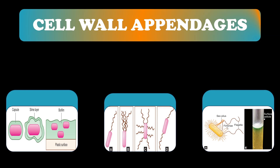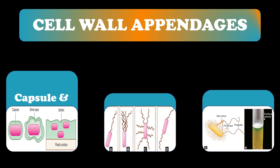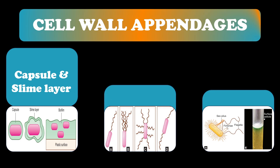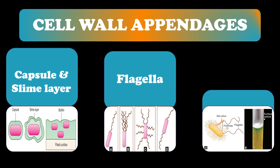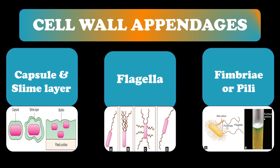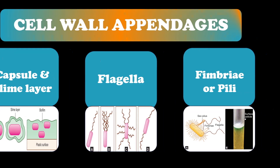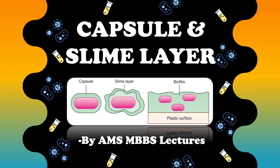This is the third video where I'm going to start discussing the cell wall appendages one by one. There are three cell appendages to be studied: the first and foremost is the capsule and slime layer, then we have the flagella, and lastly we're going to cover the fimbriae or pili. These are three important appendages, each covered in separate videos, starting with the first appendage — the capsule and slime layer.